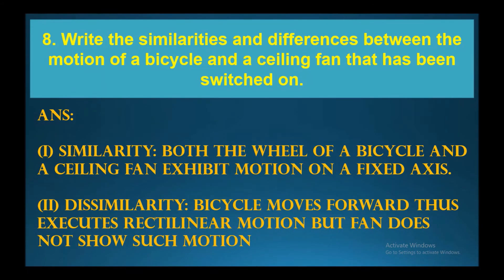Write the similarities and differences between the motion of a bicycle and a ceiling fan that has been switched on. Similarity: both the bicycle wheel and a ceiling fan exhibit motion on a fixed axis, which is circular motion. Difference: a bicycle moves forward and thus executes rectilinear motion as well, but the fan does not show such motion.